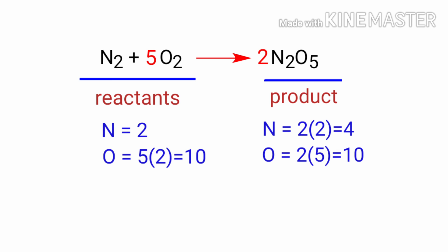The oxygen atoms are balanced, but the nitrogen atoms are unbalanced. To balance that, we need to put a coefficient of 2 in front of N2.